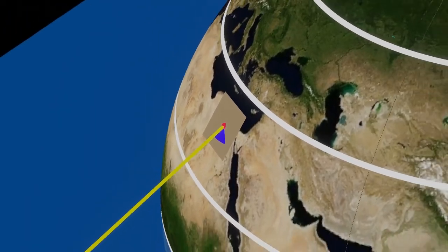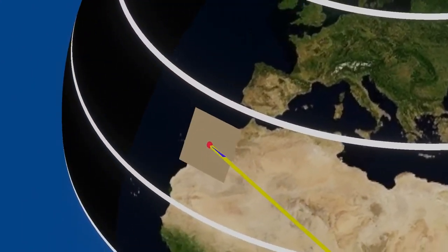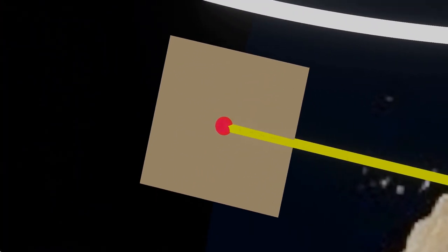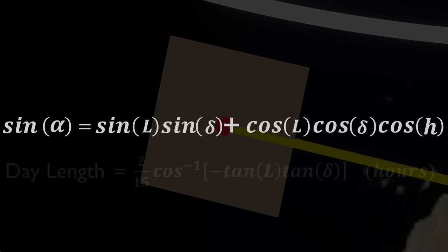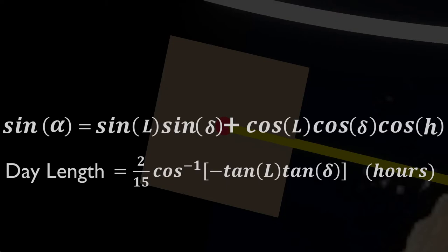Keep in mind that the altitude angle at sunset and sunrise is zero, as we don't have to look upwards to see the sun at those times. So we can put zero into this formula to find the hour angles for sunset and sunrise at any location. By doing this, we will be able to find the length of the day and the length of the night. There is also a formula to calculate the length of the day directly.